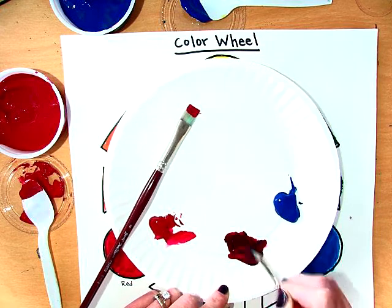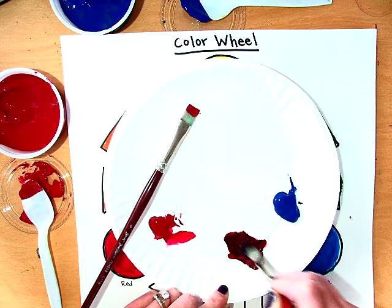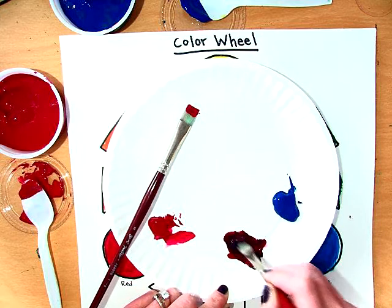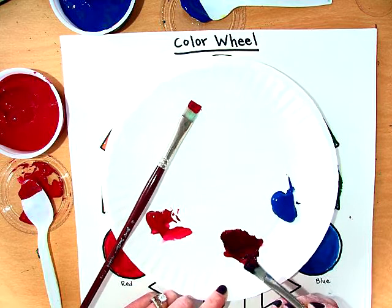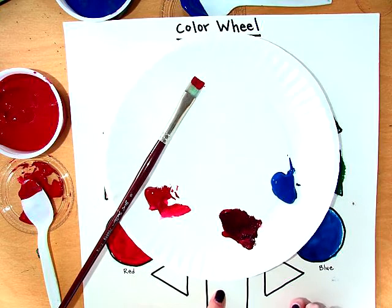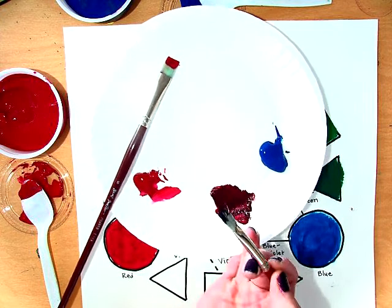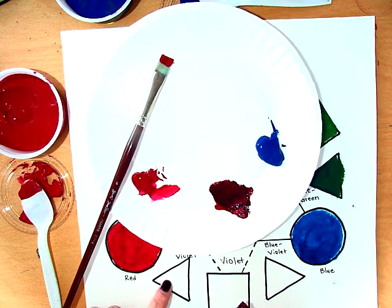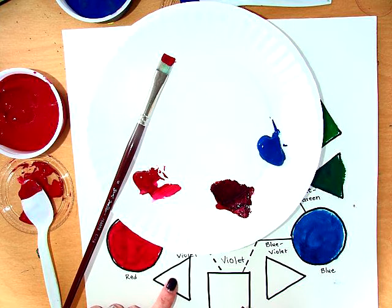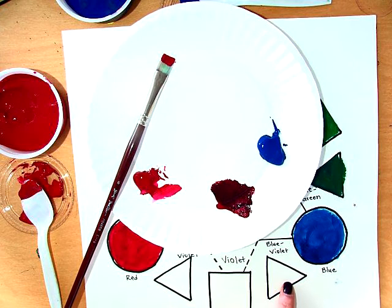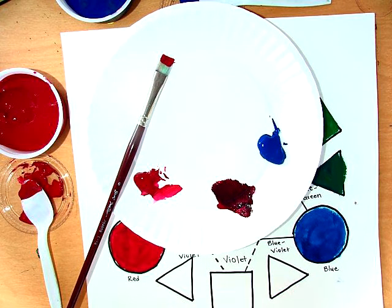Now I barely put any blue in there and this is looking like a pretty good violet. If I think it's good I can put it right in the middle of violet. If it looks like it's too red I could put it over here in the red violet, and if it looks like it's too blue, which is usually what happens to students, then you put it right here.